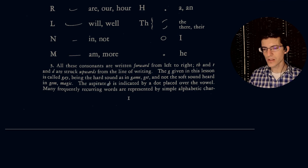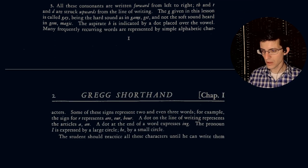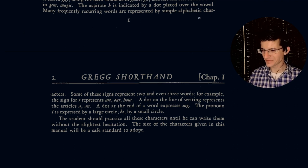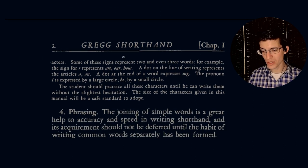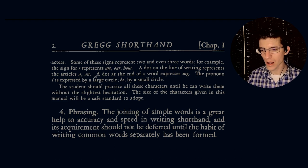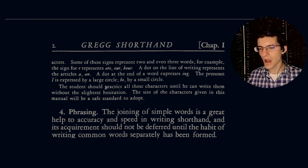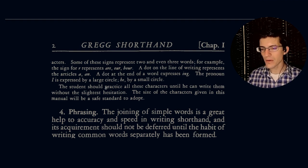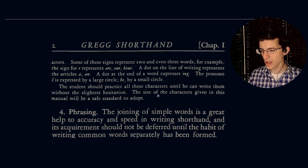The G given in this letter is called gay, being the hard sound as in game, get, and not the soft sound heard in gem, magic. The aspirate H is indicated by a dot placed over the vowel. Many frequently recurring words are represented by simple alphabetic characters. Some of these signs represent two or even three words. For example, the sign for R represents are, our, and hour. A dot on the line of writing represents the articles a and an. A dot at the end of a word expresses ing. The pronoun I is expressed by a large circle, he by a small circle. The student should practice all these characters until he or she can write them without the slightest hesitation.